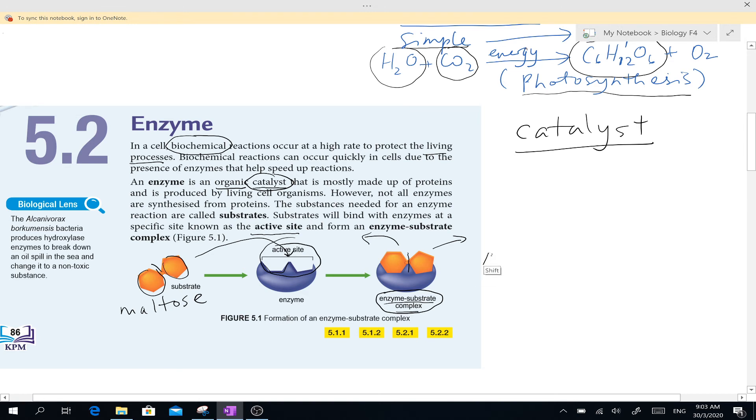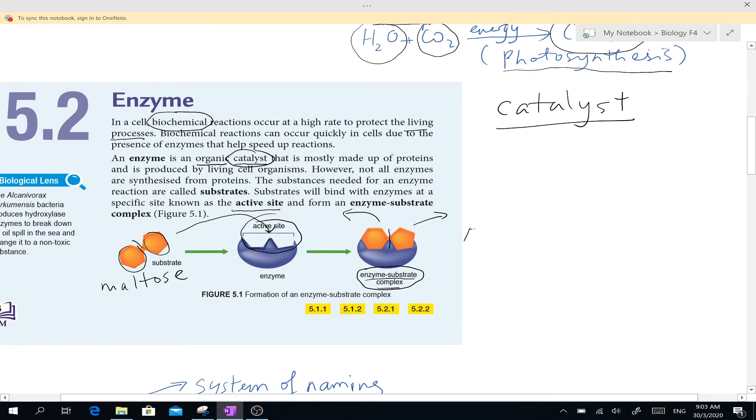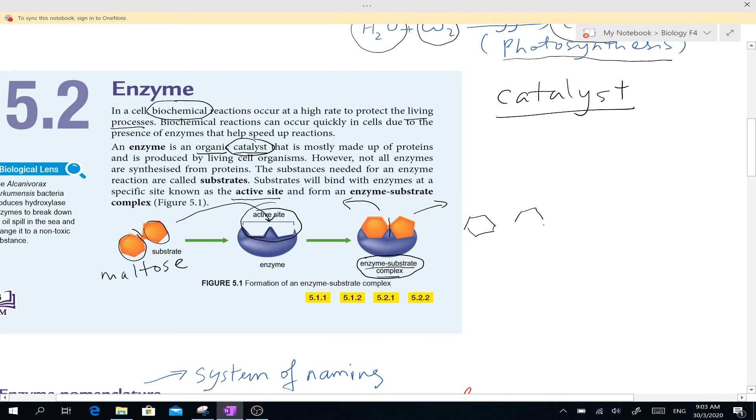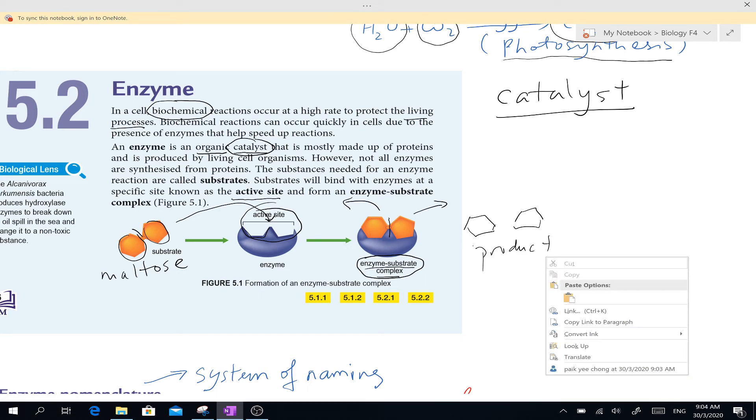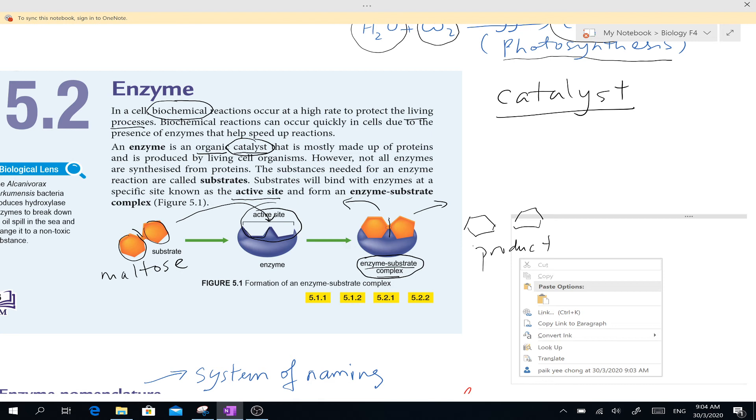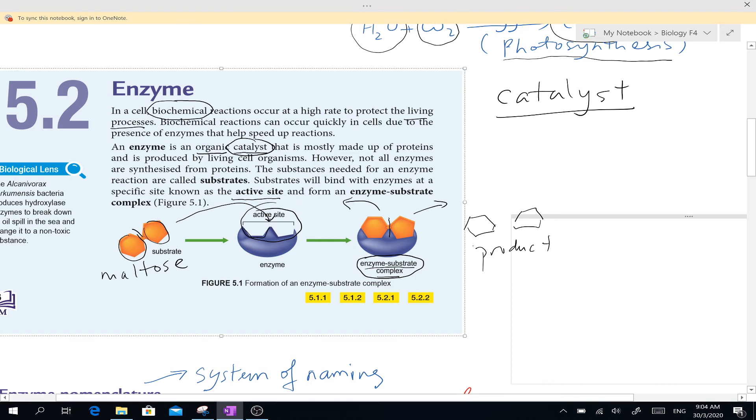Once it's broken down, it will release your what you call the product. The product will be—I'll draw it here—your product here will be your two units of glucose. This will be your unit. This is your glucose and glucose. So this is called the product. You need to remember, when you want to mention about your enzyme, you need to talk about its active site. The active site is important because this is where the substrate actually binds to it. The temporary molecule which is formed after the substrate binds into it is called enzyme-substrate complex.